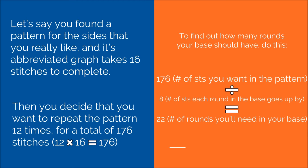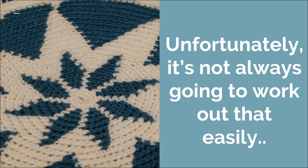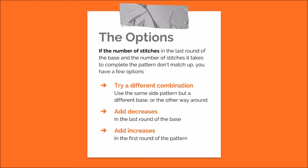Now in both of these examples we got perfectly round answers, but unfortunately it's not always going to work out that easily. Fortunately, even if the number of stitches in the last round of the base and the number of stitches it takes to complete the pattern don't match up, you do have a few options for dealing with this. The first option is you can try a different combination — you could use the same side pattern but a different base, or the other way around. You could also try playing around with the number of rounds in your base. The second option is you could add decreases in the last round of the base, or the third option is you could add increases.